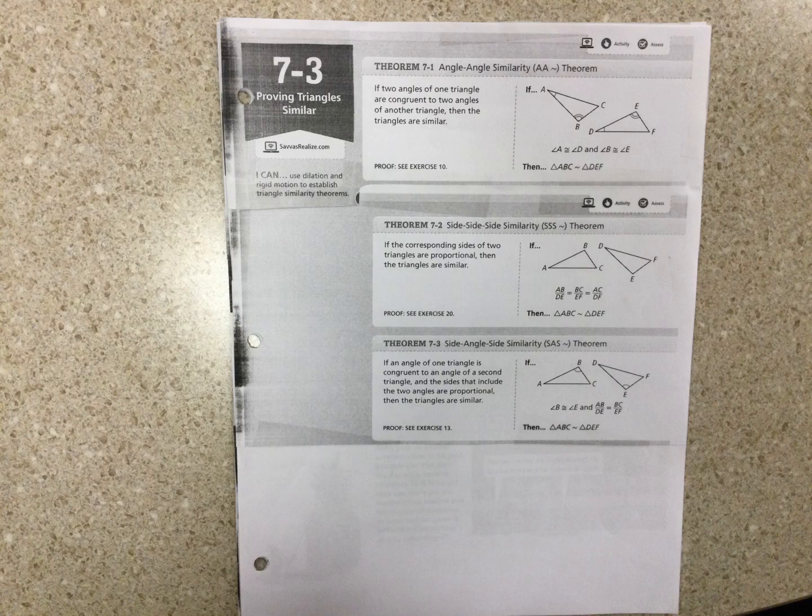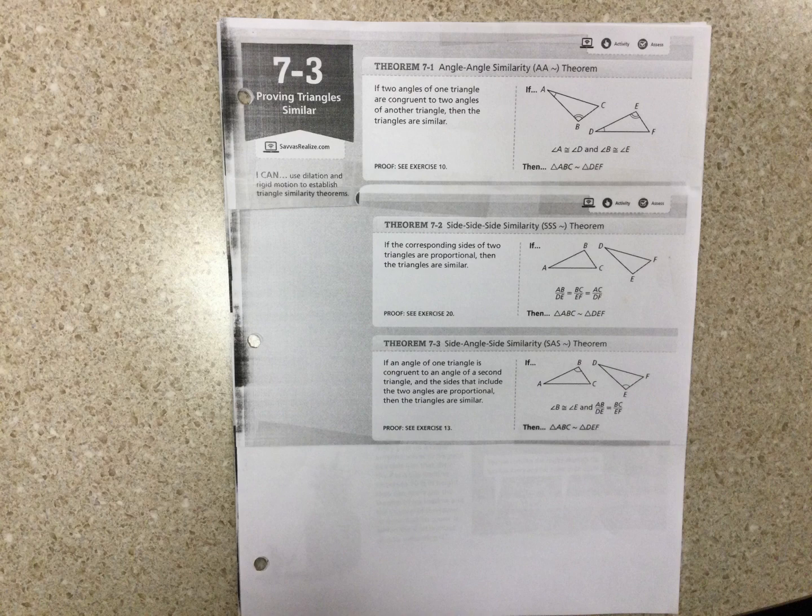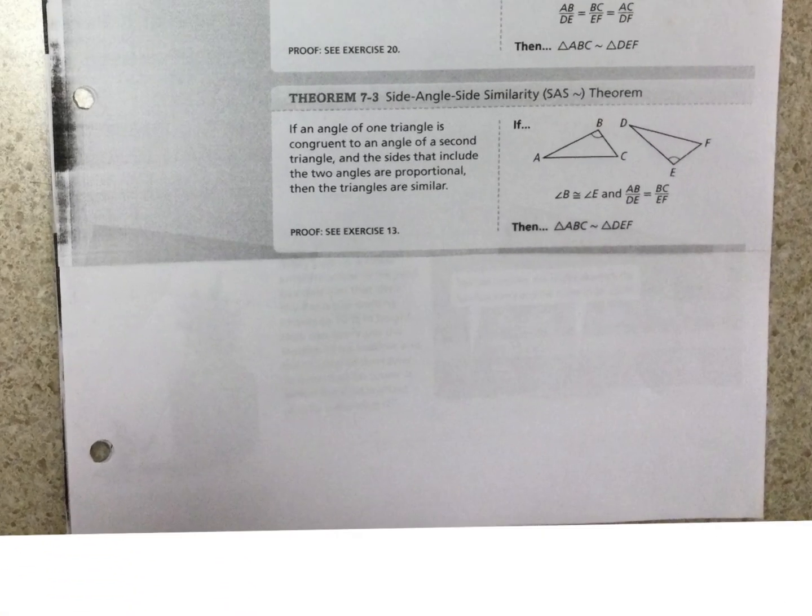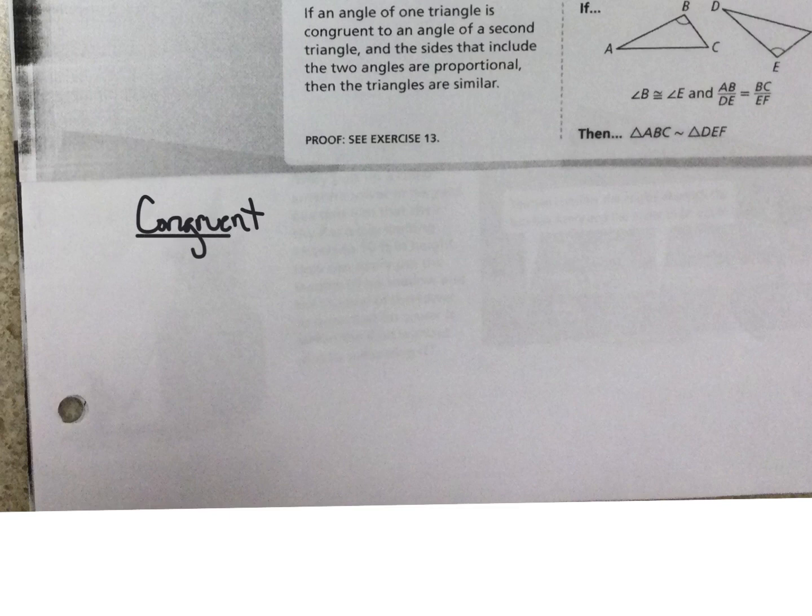Okay, so 7-3 is about proving triangles are similar. Let's talk first about the differences between congruent and similar. Congruent uses this symbol. Similar uses this symbol.